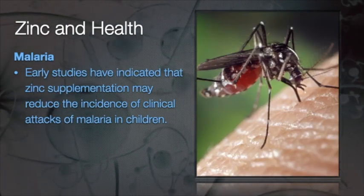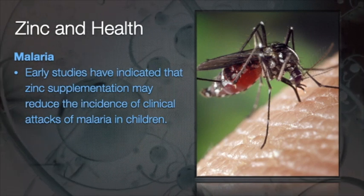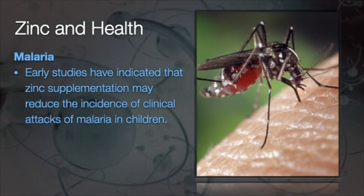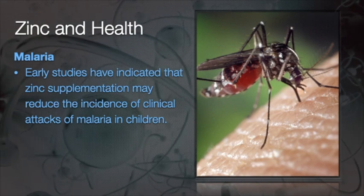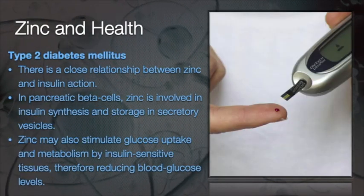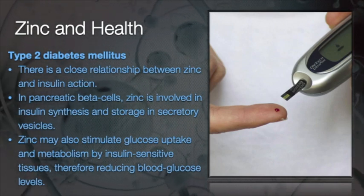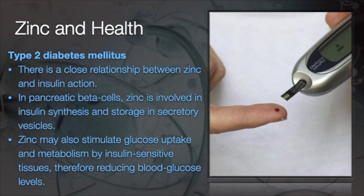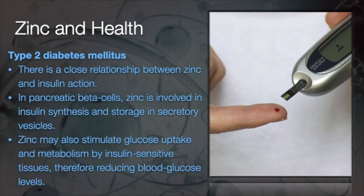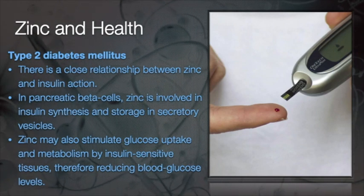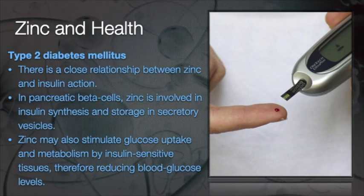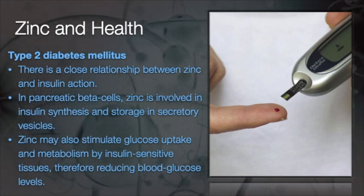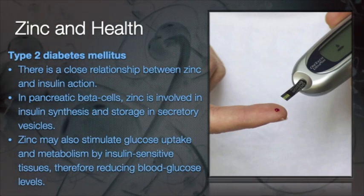Zinc and malaria: Early studies have indicated that Zinc supplementation may reduce the incidence of clinical attacks of malaria in children. Regarding type 2 diabetes mellitus, there is a close relationship between Zinc and insulin action. In the pancreatic beta cells, Zinc is involved in insulin synthesis as well as its storage in secretory vesicles. Zinc may also stimulate blood glucose uptake and metabolism in insulin-sensitive tissue, thereby reducing overall blood glucose levels.